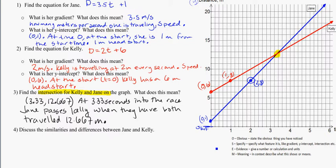So for me, the first thing I notice, an obvious feature to me, is that Kelly has a higher y-intercept than Jane. So that's going to be my first point.